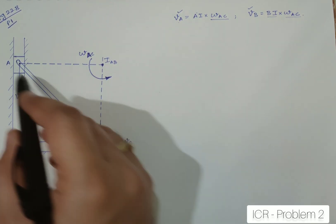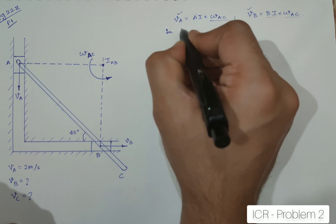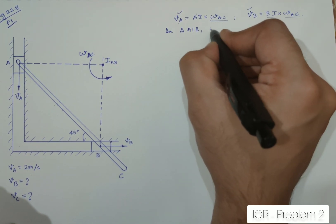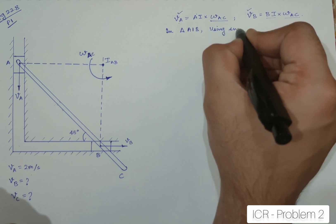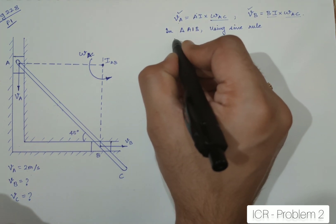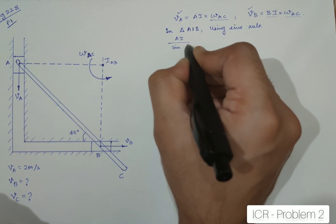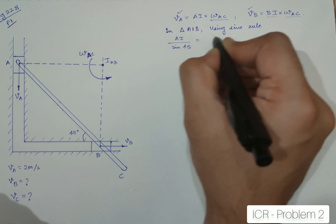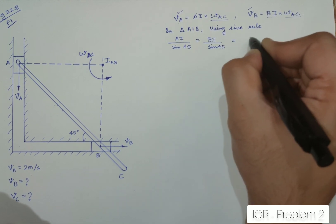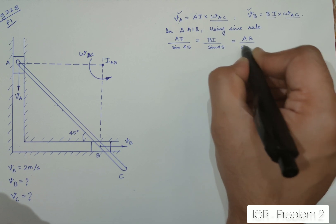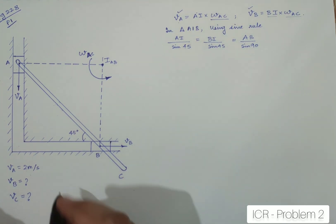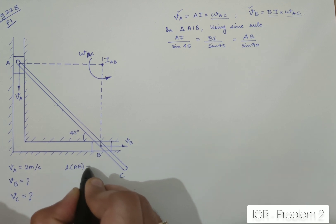In triangle AIB, I can use sine rule. In the sine rule, we can write down the equation as AI upon sin of 45 will be equal to BI upon sin of 45 which shall be equal to AB upon sin of 90. The problem is, we must be knowing at least one of the lengths. Yes, we are given the length AB as 0.2 meters and length BC is given as 0.1 meters.